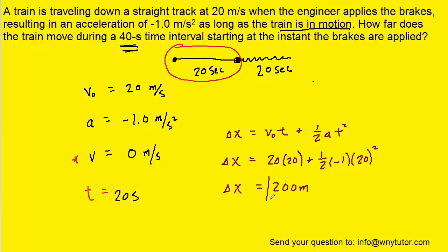So that will be how far the train travels during the first 20 seconds and frankly how far it travels for the overall 40 second time interval. Because once again, in the second set of 20 seconds, it wasn't moving at all. Its final velocity was 0.